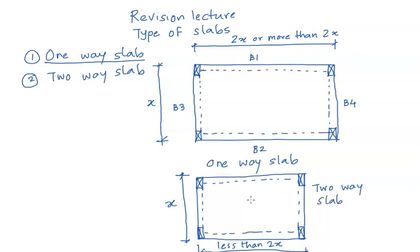In the case of a two-way slab, the load gets transferred to all the beams — B1, B2, B3, and B4. That is the speciality of a two-way slab. To revise: in case of a one-way slab, the length of the slab is twice the breadth or more than twice the breadth.